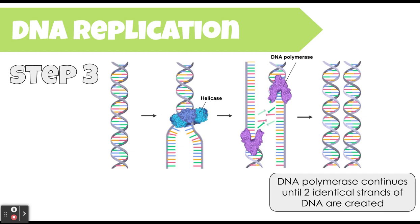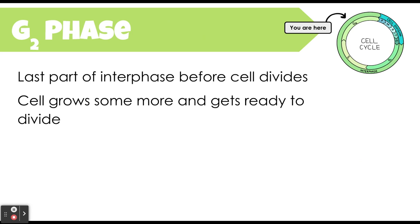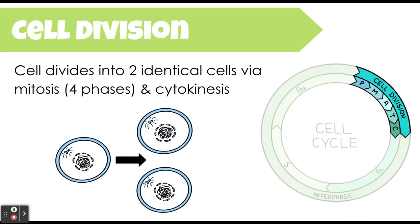DNA polymerase will continue along that strand of DNA until we get two full identical copies of DNA. After the S phase, DNA has been copied and everything has been copied correctly. The cell will then enter the G2 phase, which is right before division. This is where the cell double-checks that it is ready to divide — its DNA and organelles have been copied — and if all is good, the cell will move on to cell division.